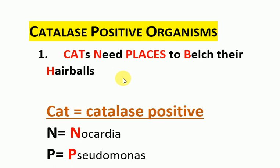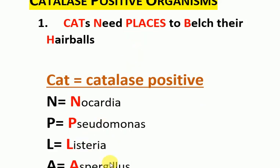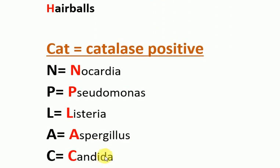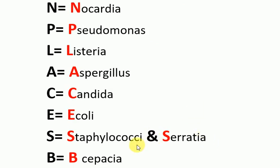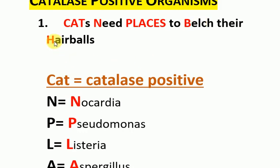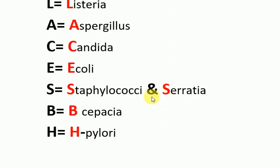The letters shown in red denote the names of the catalase-positive organisms. 'Cat' is for catalase-positive and stands for Nocardia; P for Pseudomonas; L for Listeria; A for Aspergillus; C for Candida; E for E. coli; S for Staphylococci and Serratia; and B for Burkholderia cepacia; H for H. pylori.